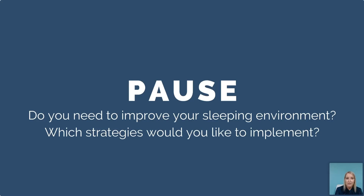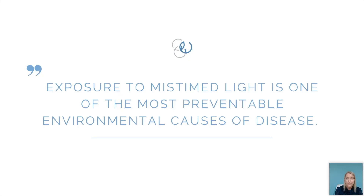Write it in your workbook: do you need to improve your sleeping environment? What strategies would you like to implement? Is it your sheets, your bed, decluttering the bedroom, using a heavy blanket, or downloading a white noise app or buying a white noise machine? Once you've answered those questions, let's move on and talk about light exposure and what changes you could implement to improve your sleep.